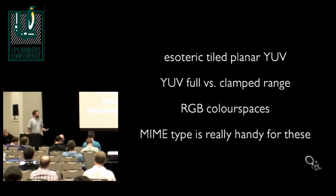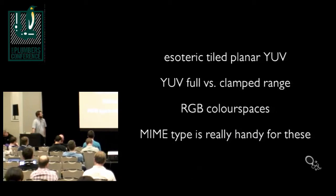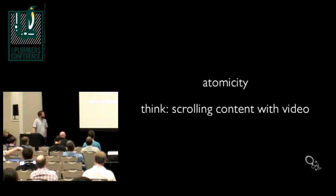The MIME type ends up being really handy for these because rather than trying to cram every constraint into four bytes of FourCC, it's really easy to just throw on additional tags and constraints. The downside to implementing that in the kernel is that it doesn't nicely drop into a uint32, so you end up trying to pull strings out of user space, which is quite hairy.